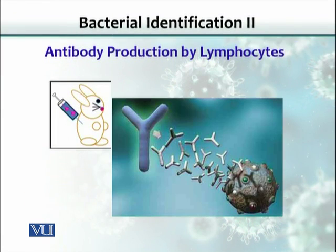Let me tell you briefly about antibody production because this is a new topic. An antigen is any substance that, when injected into an animal or a human body, induces antibody production. For example, let's say in this syringe we have a bacterium — we kill that bacterium so that it does not cause infection in this rabbit.